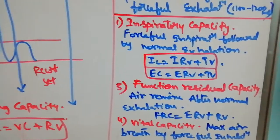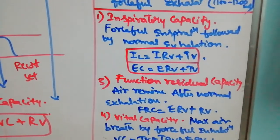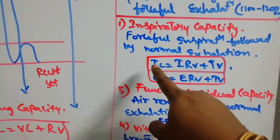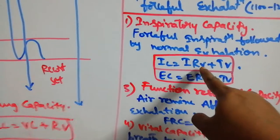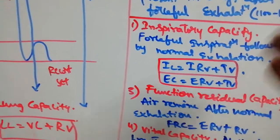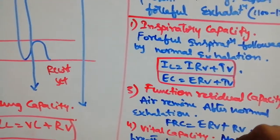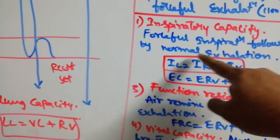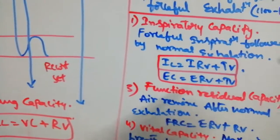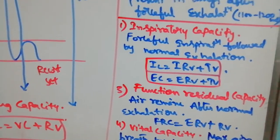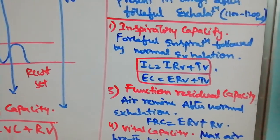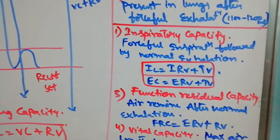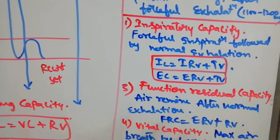To recap the capacities: Inspiratory Capacity (IC) is forceful inspiration followed by normal exhalation, so IC equals IRV plus TV. Expiratory Capacity (EC) is forceful expiration followed by normal inspiration, so EC equals ERV plus TV.